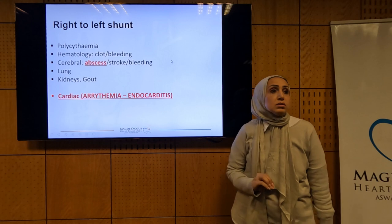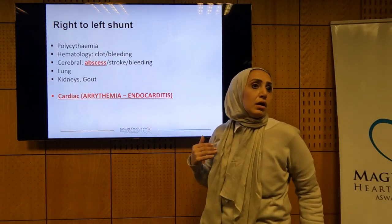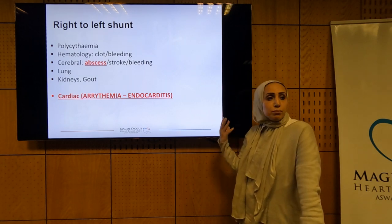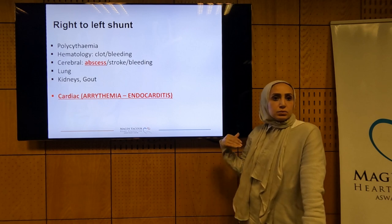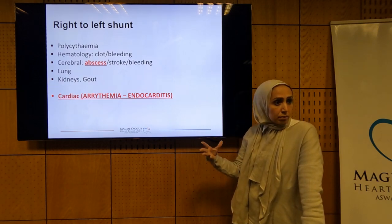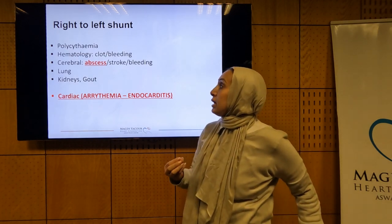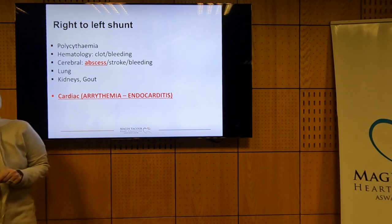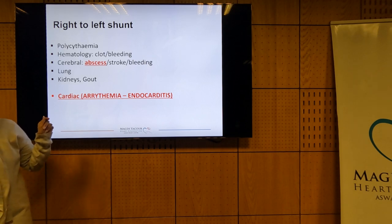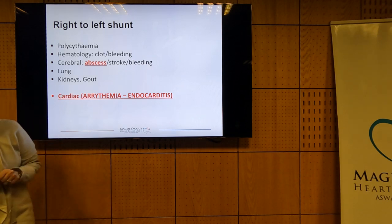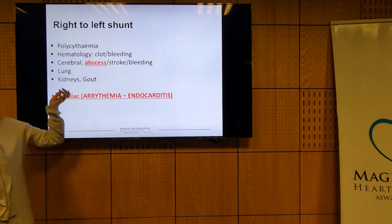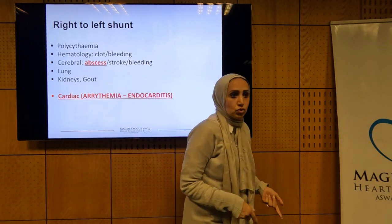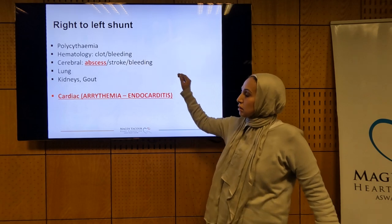Because of the right-to-left shunt, these patients have major extracardiac problems. They are chronically hypoxic, which stimulates the bone marrow, producing more RBCs — they are polycythemic. They have hematological discrepancy, making them subject to both clotting and bleeding. Brain abscess, stroke, and bleeding are not uncommon. The lungs and kidneys are usually affected, and most are symptomatic from gout due to RBC destruction.